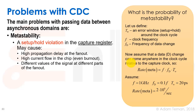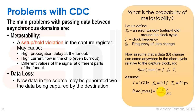Assuming a data change can come anywhere in the clock cycle relative to the capture clock, the rate of metastability is F times F_D times the timing window TW. With a 1 GHz clock, a data change frequency of 0.1 times that, and a timing window of 20 picoseconds, we get a metastability rate of 2 million times per second — quite a lot of metastable events inside our chip.